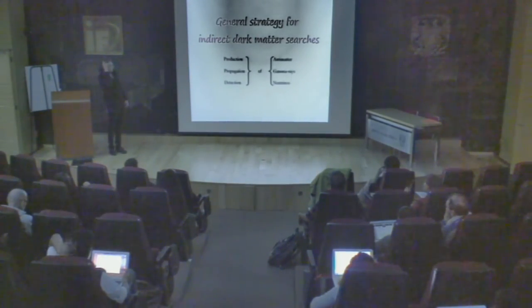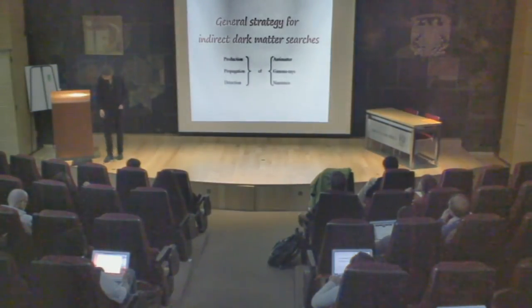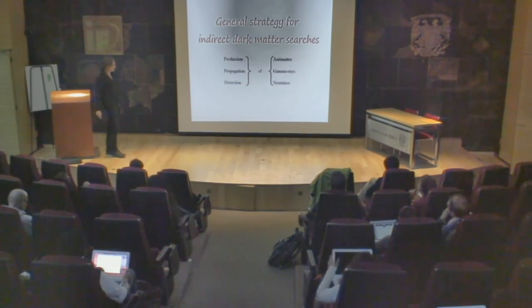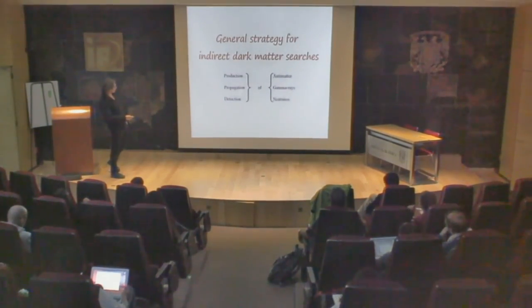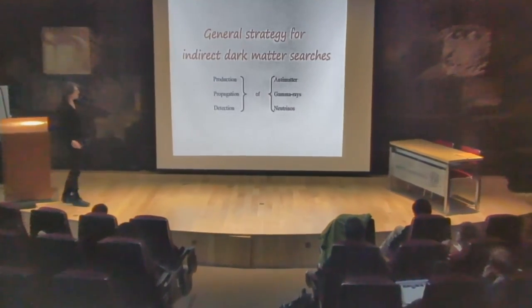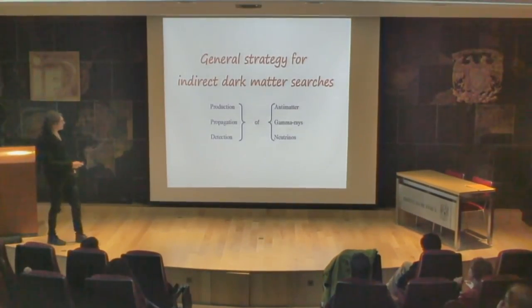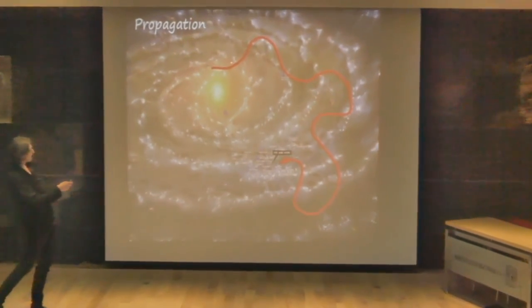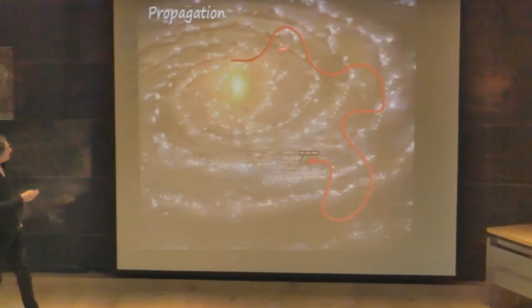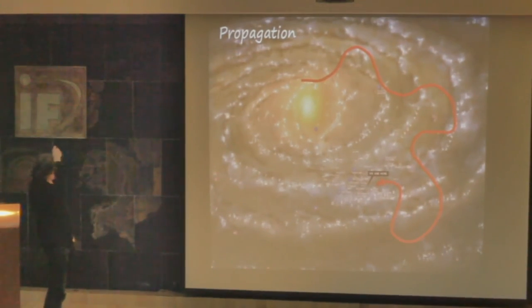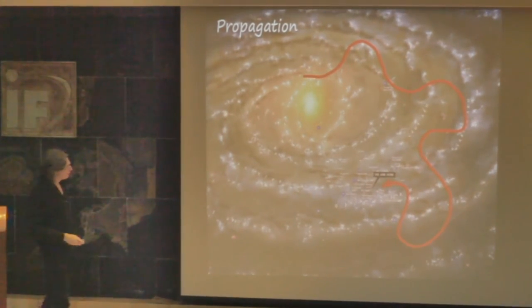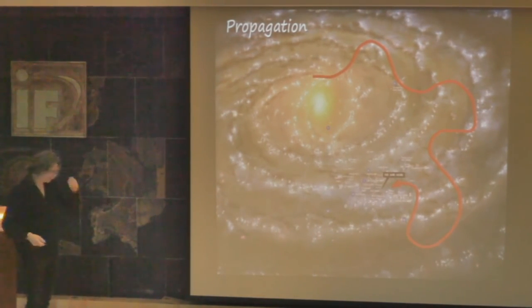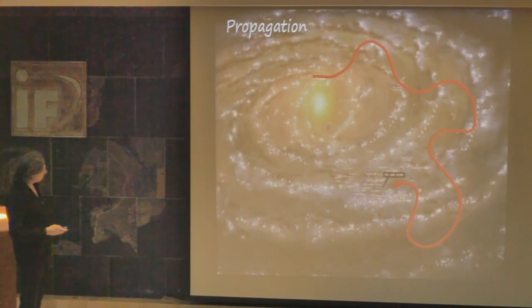Yesterday we discussed the general approach to calculate the signal from dark matter annihilation. This proceeds in three steps: production, propagation, and detection of anti-matter, gamma rays, and neutrinos. Yesterday I covered anti-matter. The idea is that anti-matter particles can be produced in dark matter annihilations or decays, propagating throughout the galaxy and solar system until they reach the top of the atmosphere, where our experiments operate.